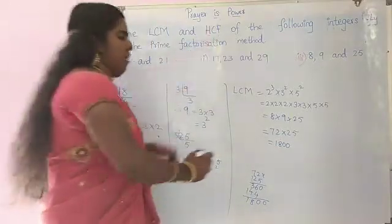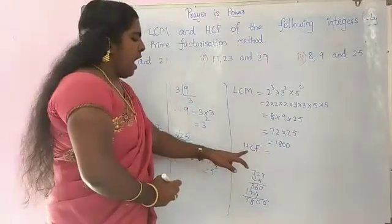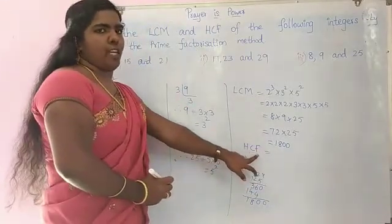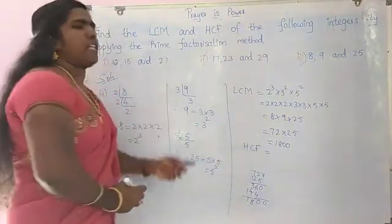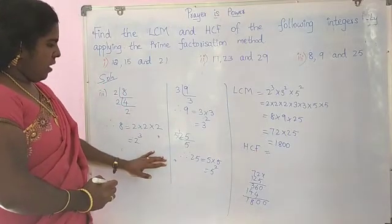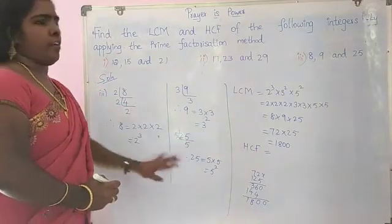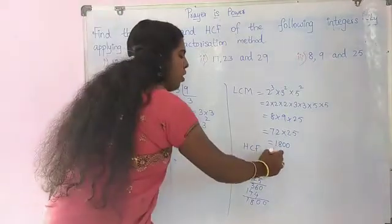Let's try to find HCF. HCF means highest common factor. We have to find the highest common factor for 8, 9 and 25. There is no common factor for 8, 9 and 25. Therefore, HCF is equal to 1.